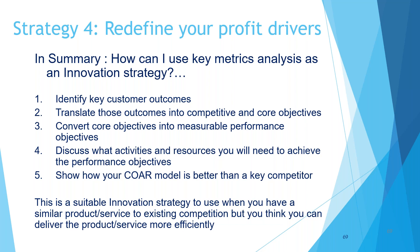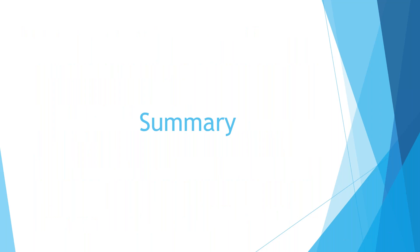So how do you use that? Identify key customer outcomes, translate those outcomes into competitive and core objectives, convert them into performance objectives, work out what resources you need to fulfil those, and track those on a daily basis with a suitable set of metrics that your people understand. That's a good innovation strategy when you've got a similar product or service to competition but you think you can deliver that more efficiently. I've had to rip through these four tools pretty quickly — some of these concepts take probably an hour to unpack in their own right — but hopefully it gives you some pointers and you can do more investigation on these yourselves.